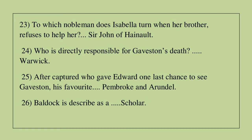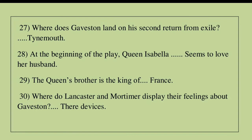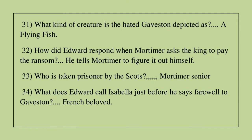Question 26: Baldock is described as a scholar. Question 27: Where does Gaveston land on his second return from exile? The answer is Caernarfon. Question 28: At the beginning of the play, Queen Isabella seems to love her husband. Question 29: The queen's brother is the king of France. Question 30: Where do Lancaster and Mortimer display their feelings about Gaveston? The answer is their devices.